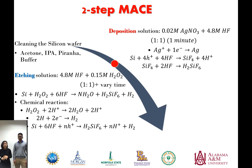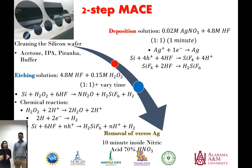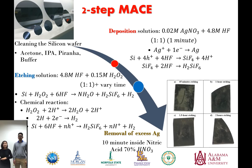The nanowires from the one-step MACE will be less porous and more pointed. After that, we come to the removal of excess catalyst, where we let the wafer stay inside a 70% nitric acid solution for 10 minutes. Lastly, after drying the wafer with nitrogen gas, we arrive at our product.